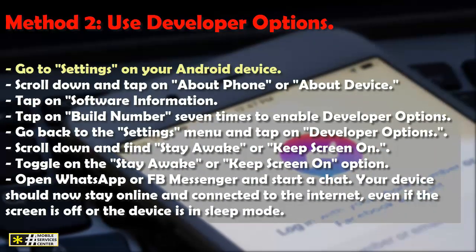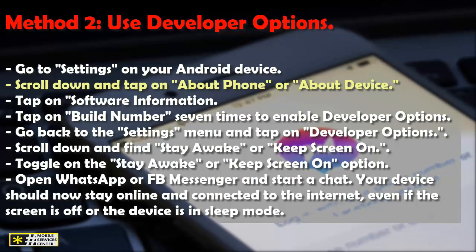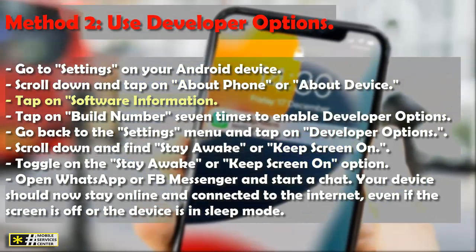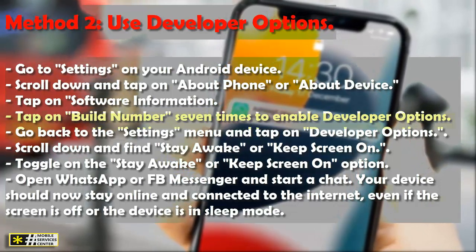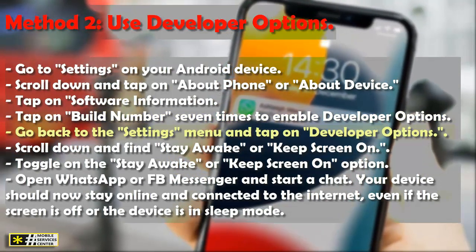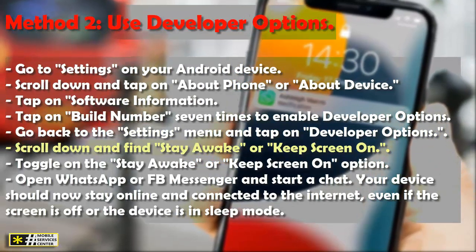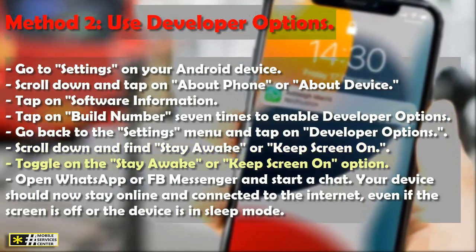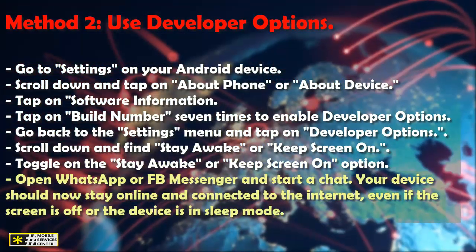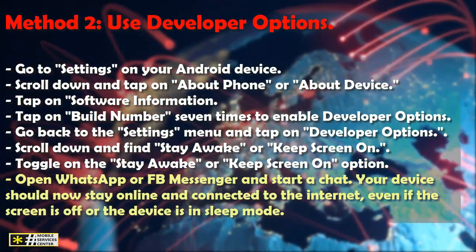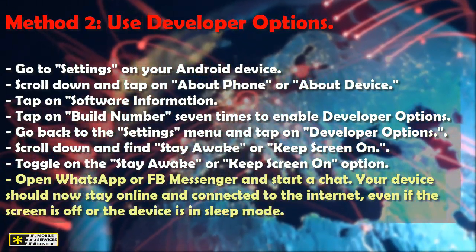Go to Settings on your Android device. Scroll down and tap on About Phone or About Device. Tap on Software Information. Tap on Build Number seven times to enable Developer Options. Go back to the Settings menu and tap on Developer Options. Scroll down and find Stay Awake or Keep Screen On. Toggle on the Stay Awake or Keep Screen On option. Open WhatsApp or Facebook Messenger and start a chat. Your device should now stay online and connected to the internet, even if the screen is off or the device is in sleep mode.